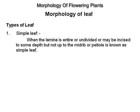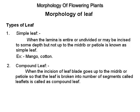Types of leaves. Simple leaf: when the lamina is entire or undivided, or may be incised to some depth but not up to the midrib or the petiole, it is known as a simple leaf, example mango and cotton. Compound leaf: when the incision of the leaf blade goes up to the midrib or the petiole so that the leaf is broken into a number of segments called leaflets, it is called a compound leaf, example rose, gulmohar and moringa.